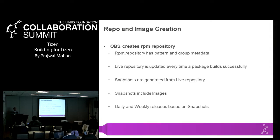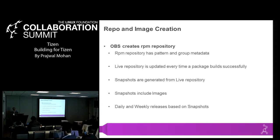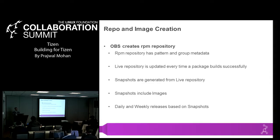Once OBS is done building a project, it creates what's known as a live repository. A live repository has all the RPMs that are generated — including binary RPM, source RPM, debug source, debug, and develop RPMs. It creates a live repo and also creates a pattern with all the metadata. The live repo is updated every time a package is successfully built. Once all the packages in a given project are done building, OBS publishes this live repo with all the changes.